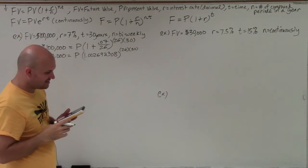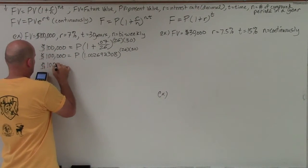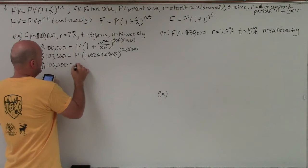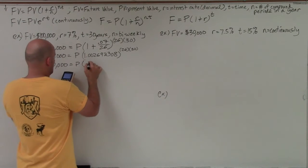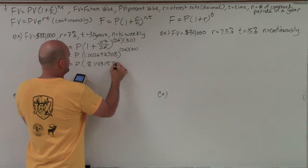And when I do 26 times 30, I now have 100,000 equals P times 8.143158612.